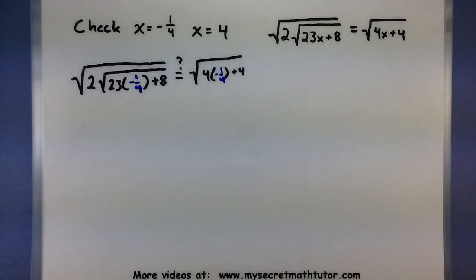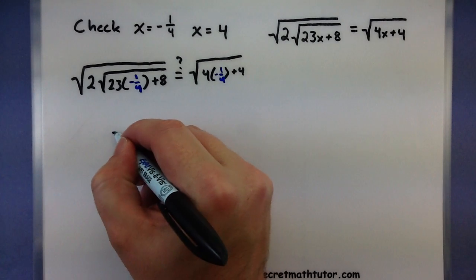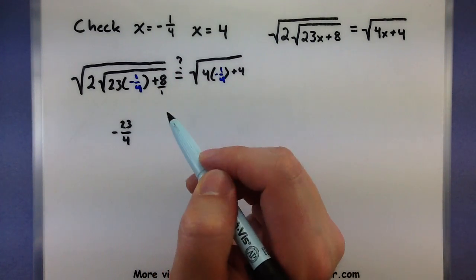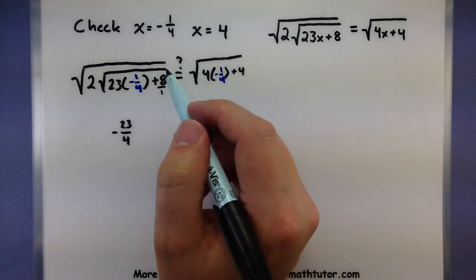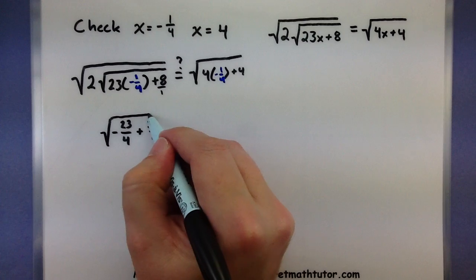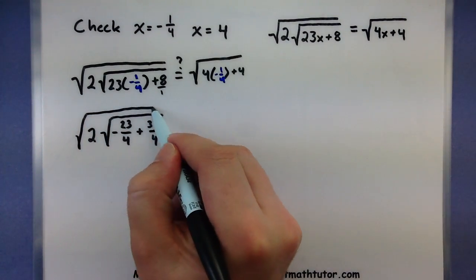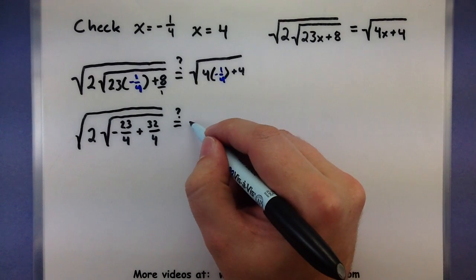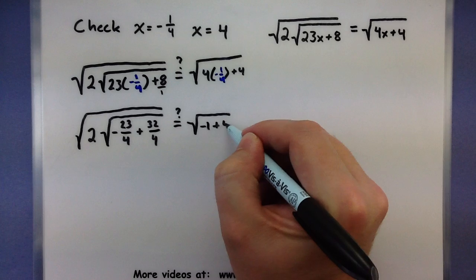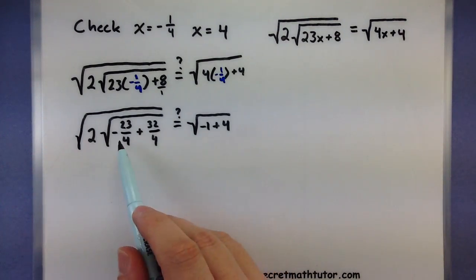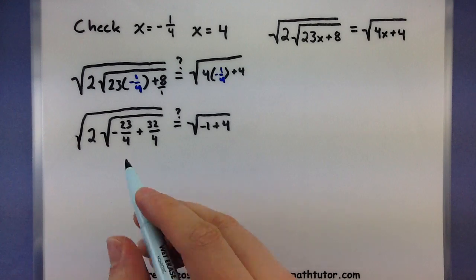Working on the left side, let's see what we can do. If I combine a negative 1 fourth times a 23, I get a negative 23 fourths. And I'm going to want to add this to the 8. So, let's get a common denominator right now, by multiplying the top and bottom by 4. So, plus 32 fourths. All of that is underneath one square root. It's being multiplied by 2. And it's all underneath another square root. And you check, does it really equal? Let's see over here. 4 times a negative 1 fourth. That's just a negative 1. Plus 4. The right side is simplifying a lot simpler than the left one. But, let's go ahead and combine these things and see what else we can do. Negative 23 fourths plus 32 fourths would be 9 fourths.